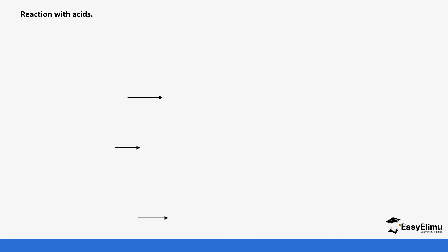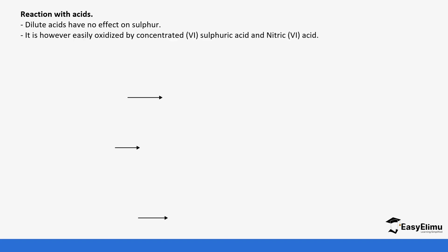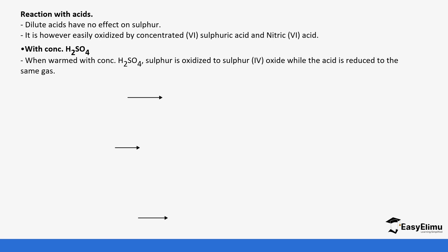When you look at the reactions of sulfur with acids: dilute acids do not have any effect on sulfur, but sulfur is oxidized by concentrated acids — specifically concentrated sulfuric acid. With concentrated sulfuric acid, it oxidizes sulfur to sulfur dioxide and is itself reduced to sulfur dioxide as well. So reacting sulfur with sulfuric acid forms sulfur dioxide and water.